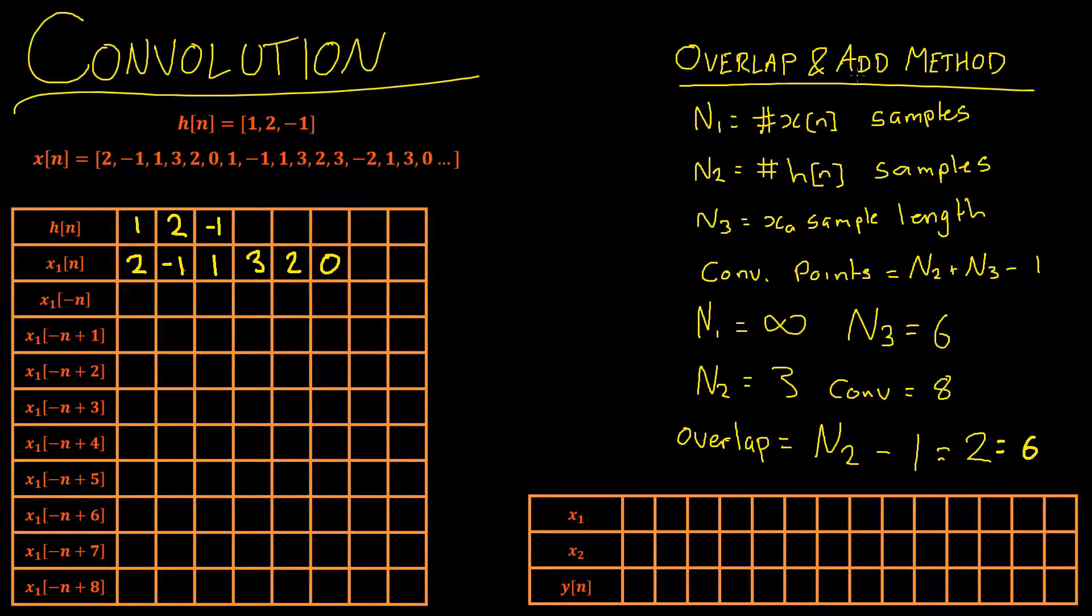A couple of things we should cover about the overlap and add method before we continue. Firstly there's a few variables here. N1, which is the number of samples in x of n, which we know is infinite. So we have N1 is equal to infinity here. Secondly we have N2 which is the number of samples in h of n. We can clearly see that that one's 3, so N2 is equal to 3.